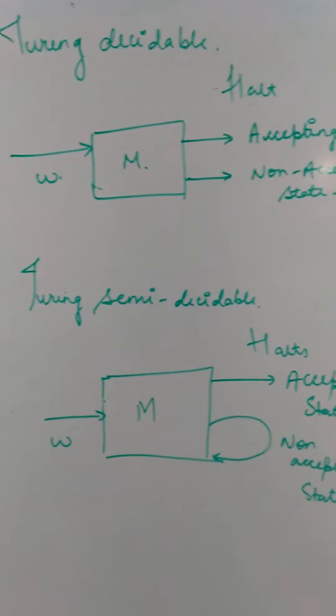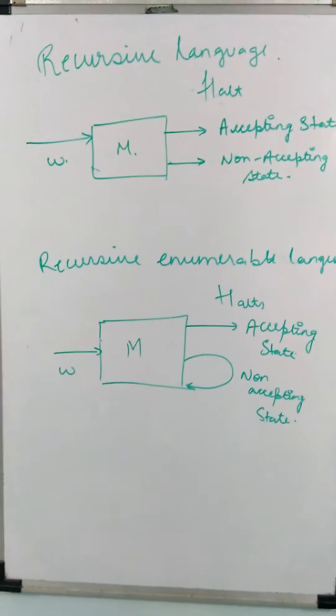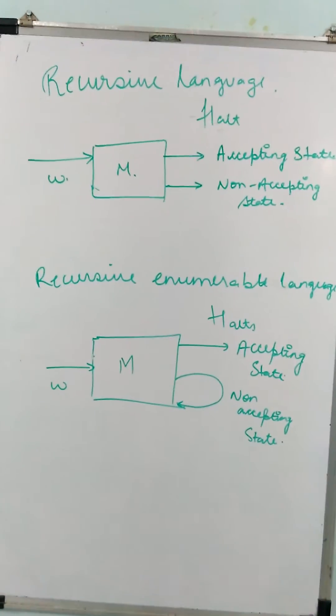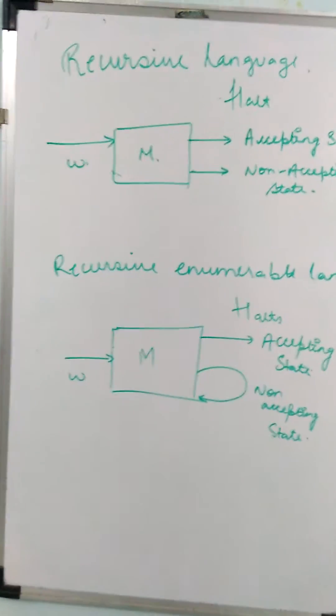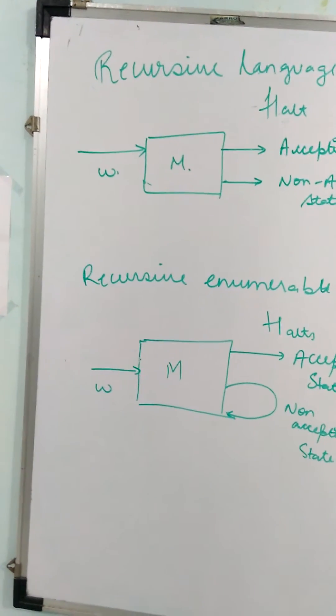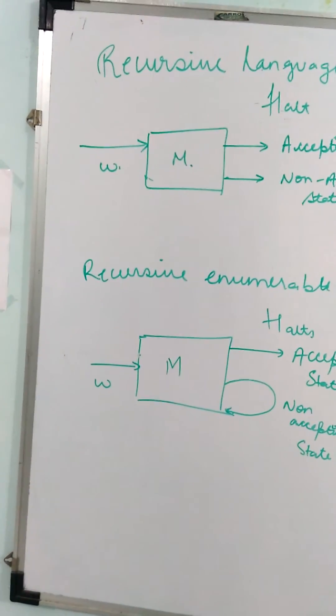Now we will see what recursive languages are. Language L is recursive if there is a Turing machine that decides it. In other words, a set X is recursive if you have an algorithm to determine whether a given element belongs to X.